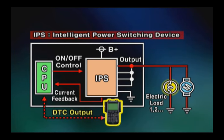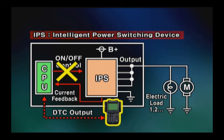If it decides there is a short, the CPU cuts off the operation command sent to the IPS to cut down the electric power. These electric devices do not have a relay or fuse.